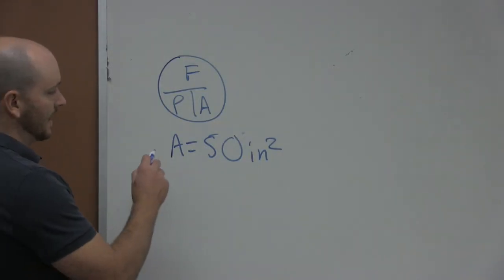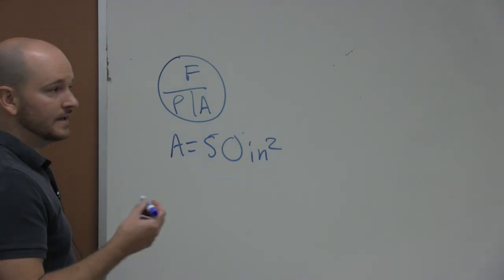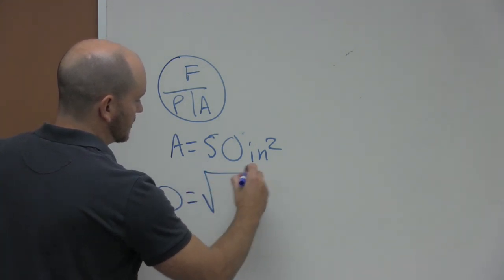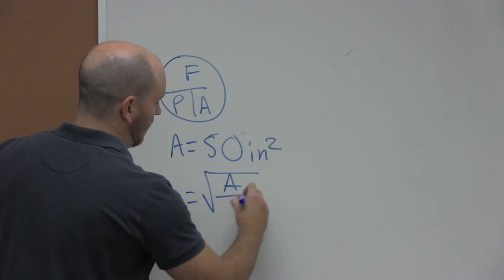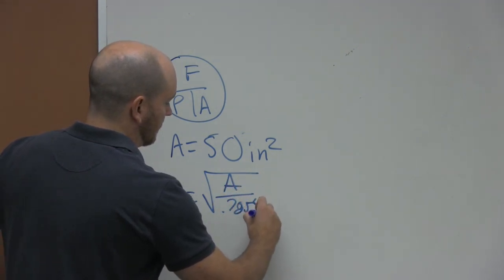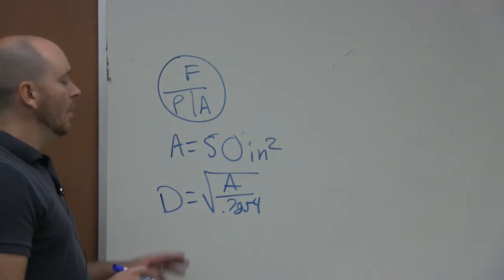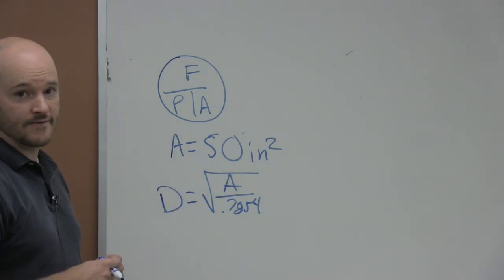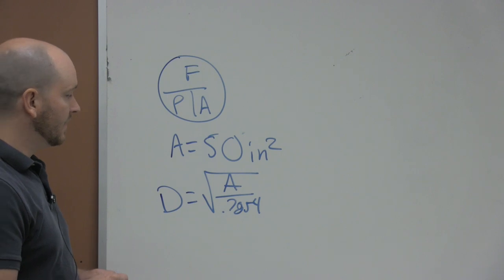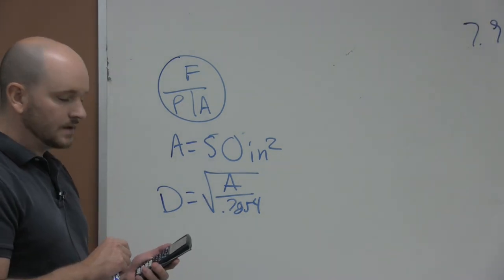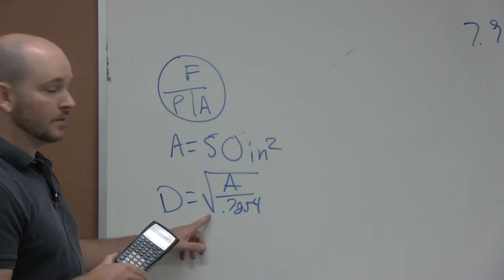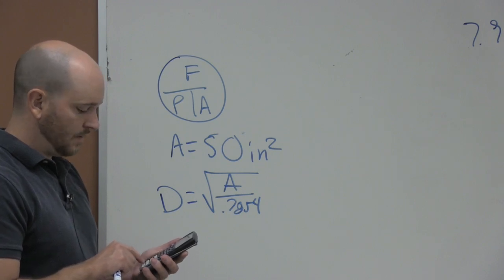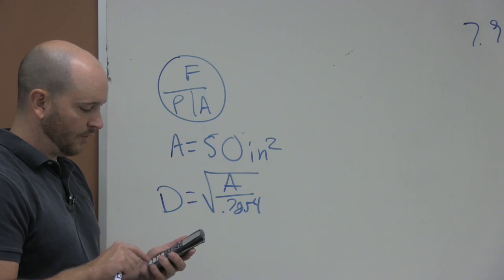To calculate the diameter when the area is known, the formula is diameter equals the square root of the area over 0.7854. When you do this, you've basically just done some math magic on the original formula of diameter squared times 0.7854. We'll get our calculators out. Depending on your calculator will depend on when you have to apply the square root key. In this one we go ahead and hit the square root key, take the area which is 50, divide that by 0.7854.